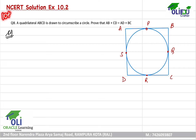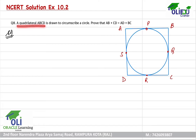We have NCERT Exercise 10.2, question number 8. The question states that ABCD is a quadrilateral which is circumscribing a circle. We have to prove that AB plus CD is equals to AD plus BC.